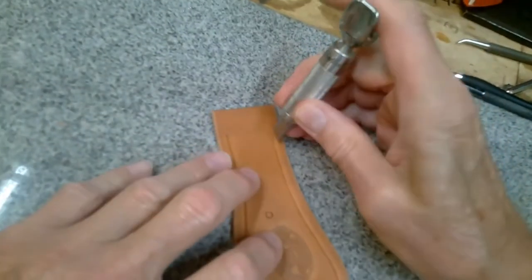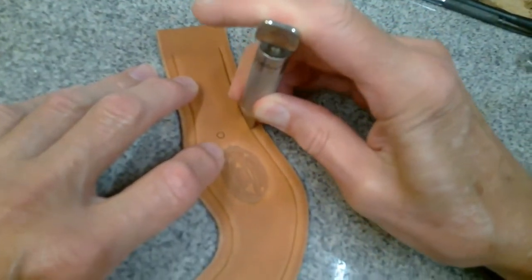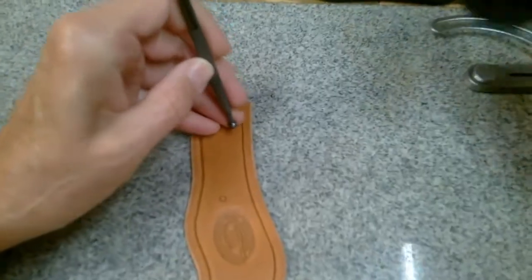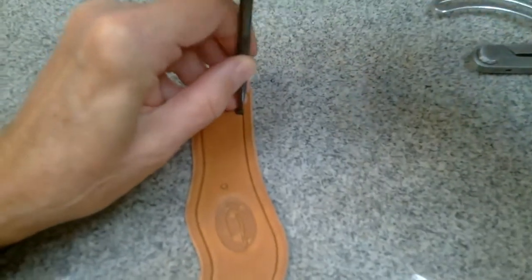Using the swivel knife, I'll cut the border lines and then I'll cut out around the maker's mark. That will be followed by the beveler first along the border lines and then around the maker mark.